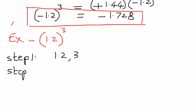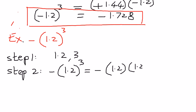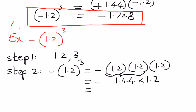In step number 2, we apply the concept. The number of times the base term needs to be repeated is indicated by the exponential term. So negative of 1.2 raised to the power of 3 — we keep the negative sign outside and repeat the base term 3 times: 1.2 times 1.2 times 1.2. Taking two at a time: 1.2 times 1.2 is 1.44, then 1.44 times 1.2 is 1.728, with the negative sign outside giving negative 1.728. Therefore, negative of 1.2 raised to the power of 3 equals negative 1.728.